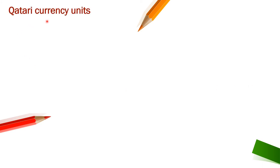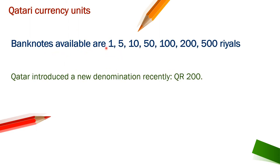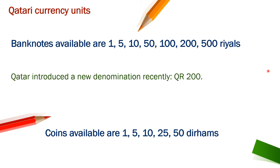Qatari currency units: banknotes available are 1 riyal, 5 riyals, 10 riyals, 50 riyals, 100 riyals, 200 riyals, and 500 riyals. Qatar recently introduced a new denomination of 200 Qatari riyals. Coins available are 1 dirham, 5 dirhams, 10 dirhams, 25 dirhams, and 50 dirhams.